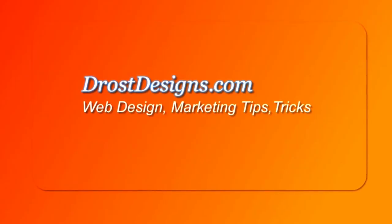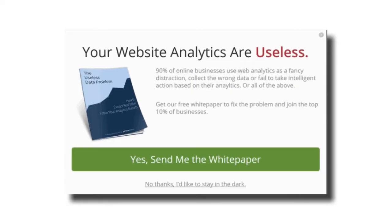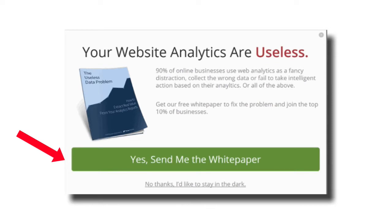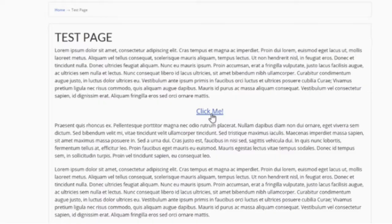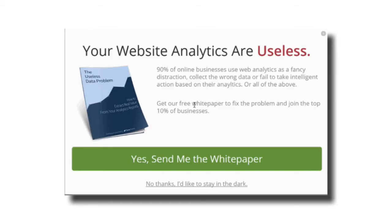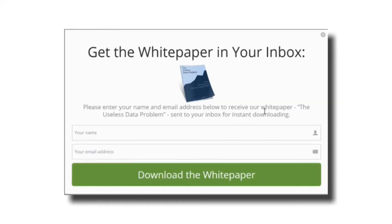Herman Drost, DrostDesigns.com. Here's what a multi-step opt-in form looks like. It first shows you an offer with a button that says 'Yes, send me the white paper.' When you click on the button, without a page reload or any delay, it loads a second state of the same form. This can be combined with a two-step opt-in form, so when you click on it, the multi-step process displays inside the form.